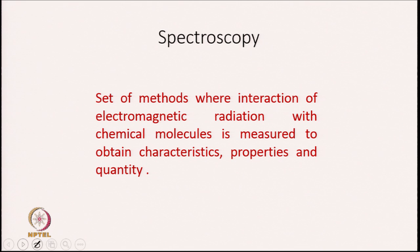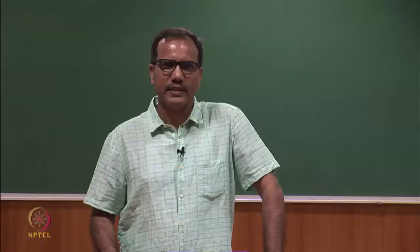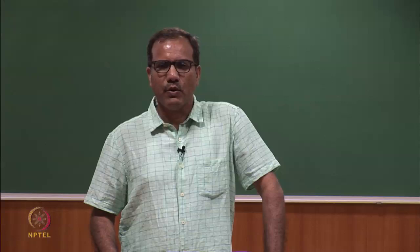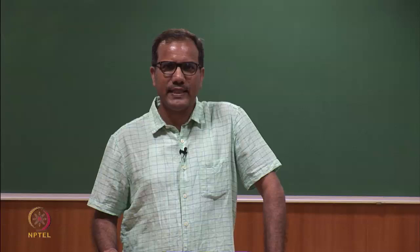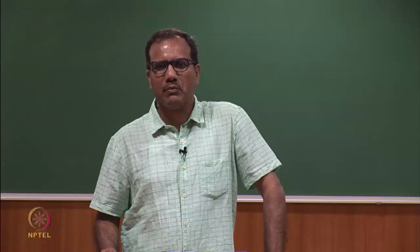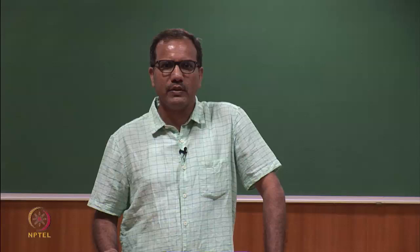Spectroscopy is a set of methods where the interaction of electromagnetic radiation with chemical molecules is measured to obtain characteristics, properties, and quantity. There are two important points: electromagnetic radiation and its interaction with chemical molecules. First, we will discuss what electromagnetic radiation is.